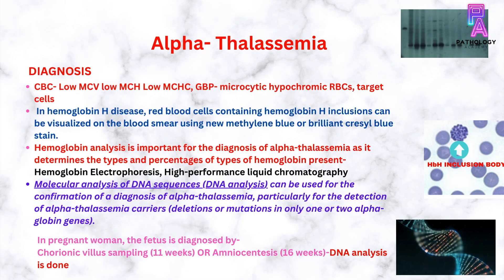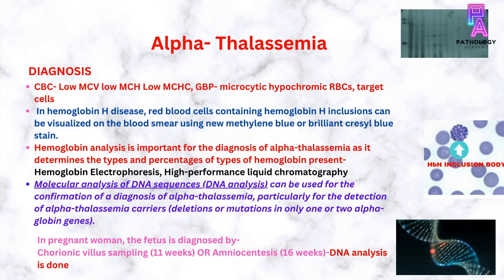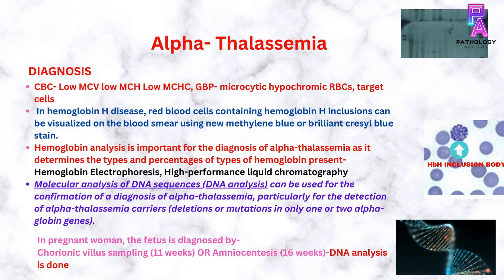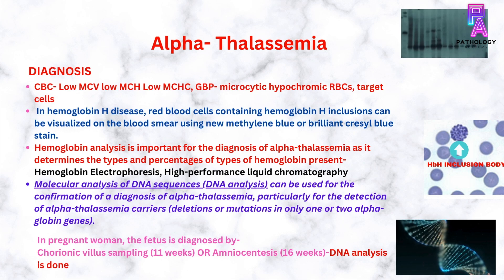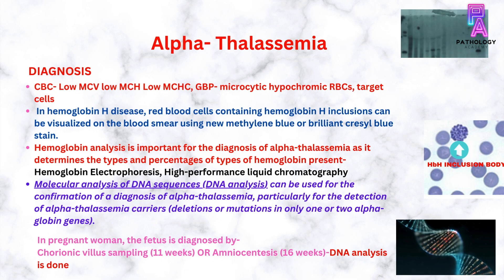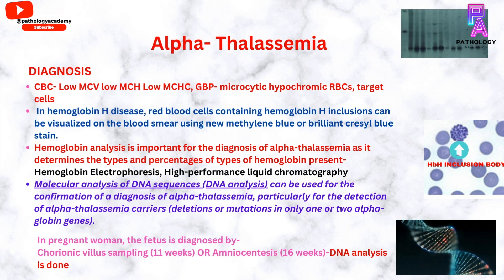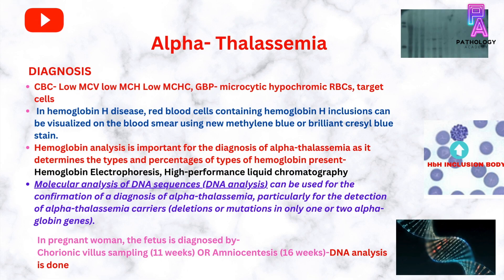In the diagnostic work-up of alpha thalassemia, complete blood counts are done, which shows low MCV, low MCH, and low MCHC. The peripheral blood smear shows presence of microcytic hypochromic RBCs along with many target cells. In cases of hemoglobin H disease, the red blood cells containing hemoglobin H inclusions can be visualized on the blood smear using new methylene blue or brilliant cresyl blue stain. Hemoglobin analysis is important for the diagnosis of alpha thalassemia as it determines the types and percentage of hemoglobin present.